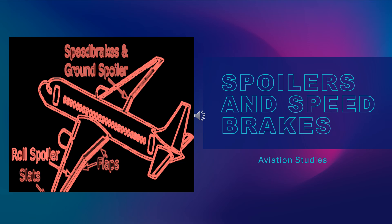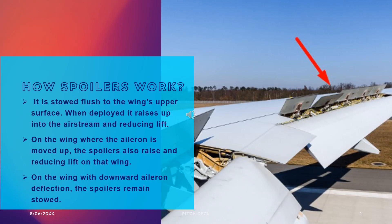The topic is about spoilers and speed brakes. A spoiler is basically a device found on the upper surface of many heavy and high-performance aircraft. It is stored flush to the wing's upper surface; when deployed, it raises up into the airstream and disrupts the laminar airflow of the wing, thus reducing lift.